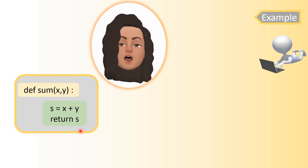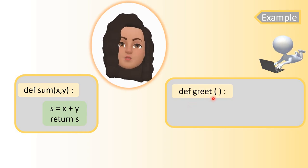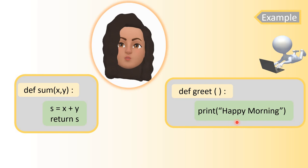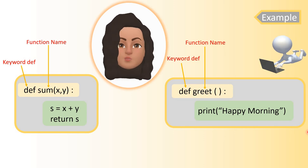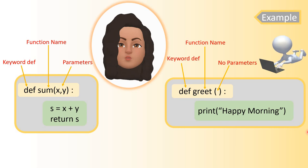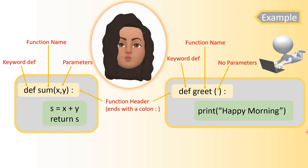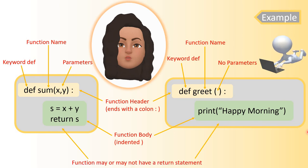The next function is without parameters and without a return statement. The name of the function is 'greet' and there is only one statement which prints 'happy morning'. So 'def' is the keyword, the first function name is 'sum' with parameters 'x, y', and the second function is 'greet' with no parameters. The function header begins with 'def' and ends with a colon. The statements with indentation are the body of the function. The first function has a return statement; the second function does not. A function may or may not have a return statement.